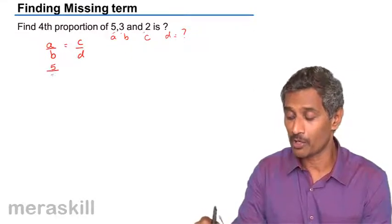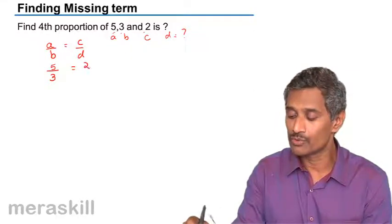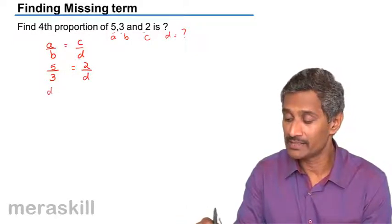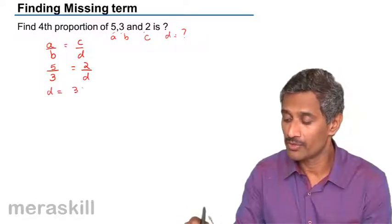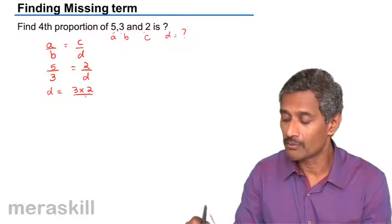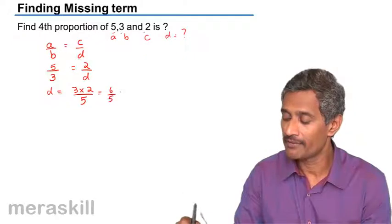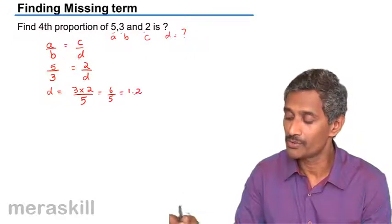So, we have 5 upon 3 is equal to 2 upon X or you can take it as D and hence D will turn out to be 3 into 2 upon 5 which is 6 by 5 which is 1.2.